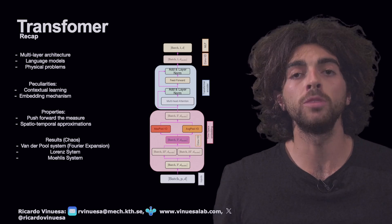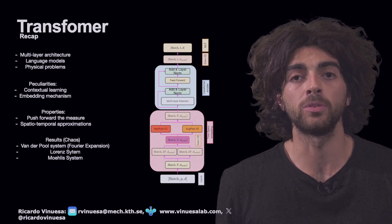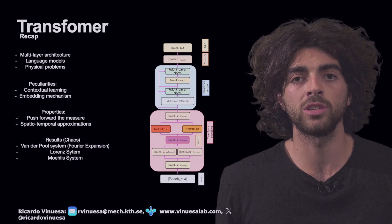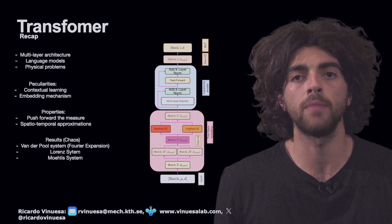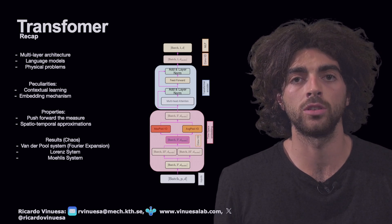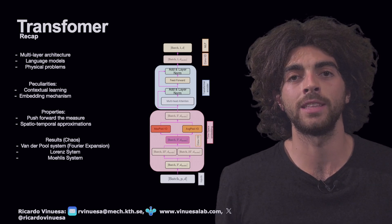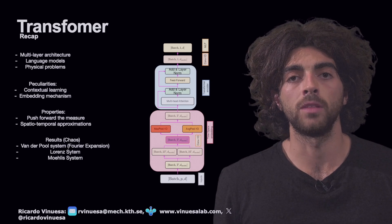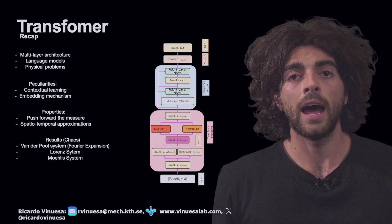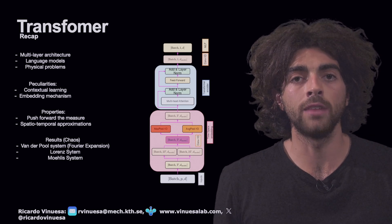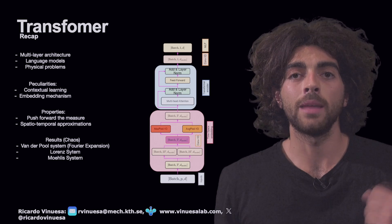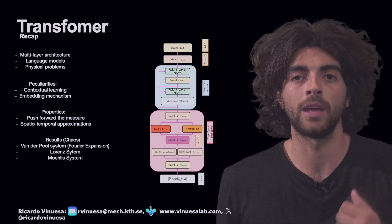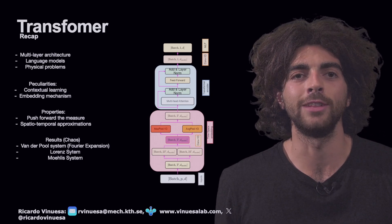The embedding has multiple possibilities. Originally it was a positional encoding thought for language translation. However, other embeddings such as the time-to-vector that we mentioned in the past video and the time-to-space embedding — a novelty mechanism that we implemented in our transformer — have great potential in retrieving temporal and spatial dependencies, creating a pseudo-input that is later fed into the transformer.